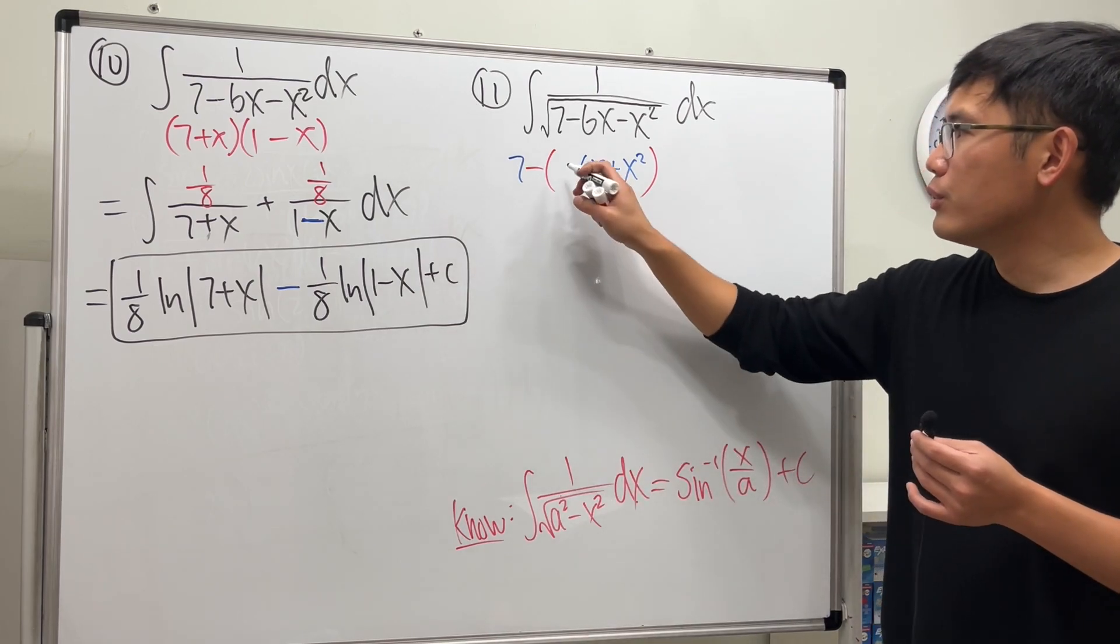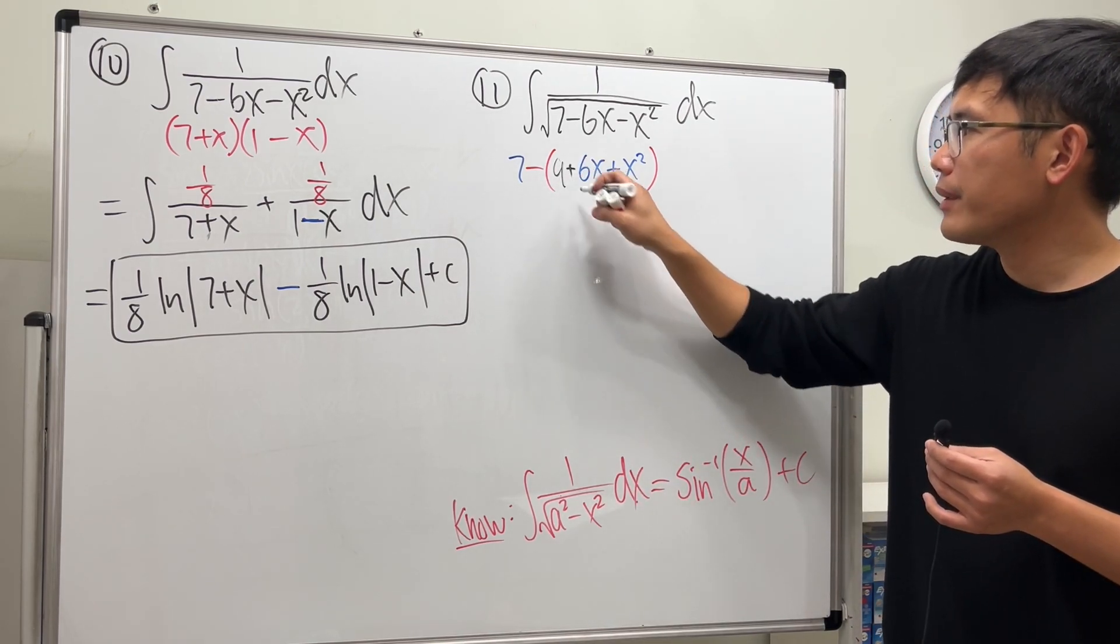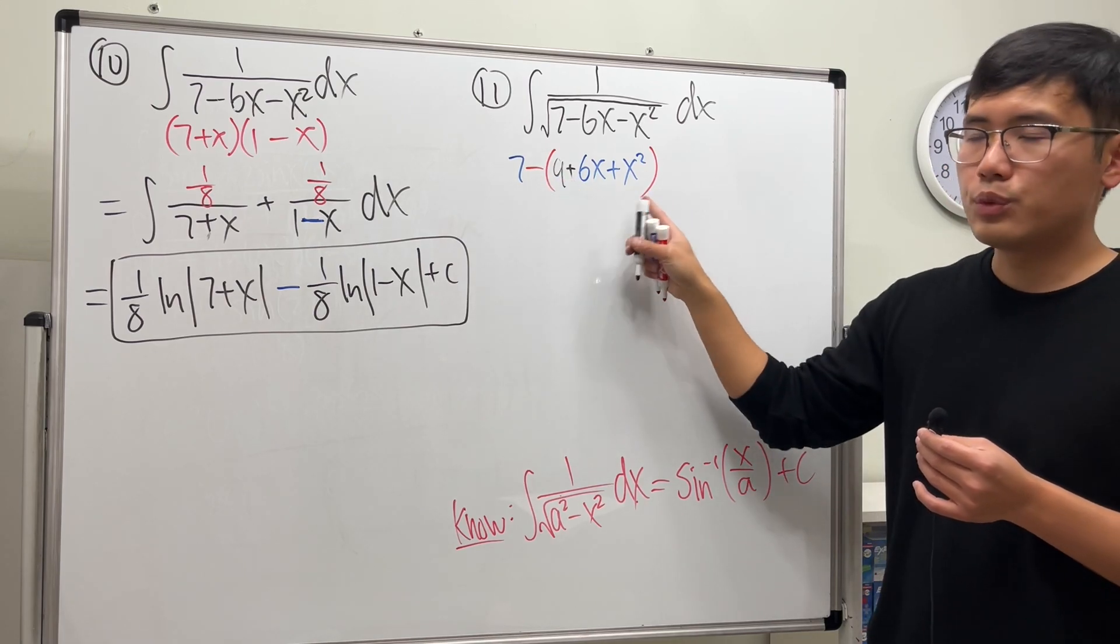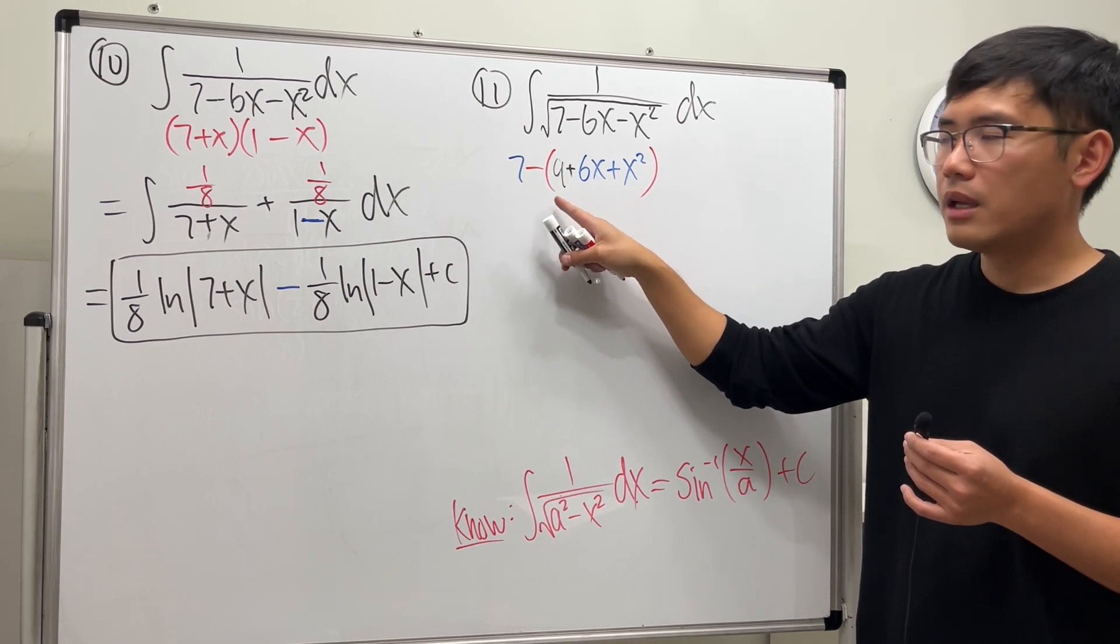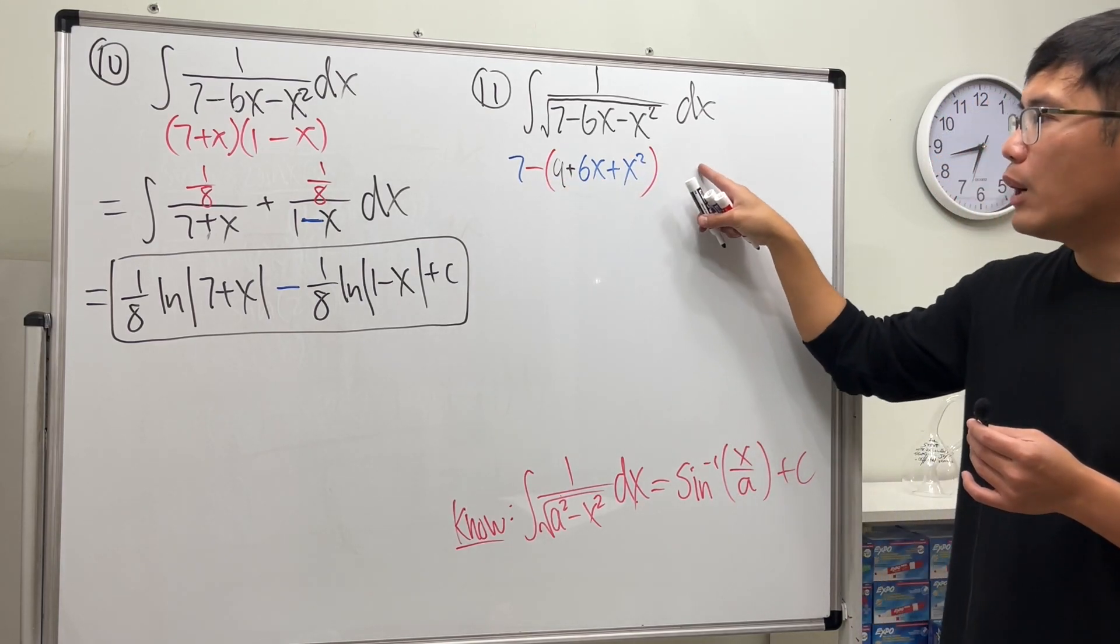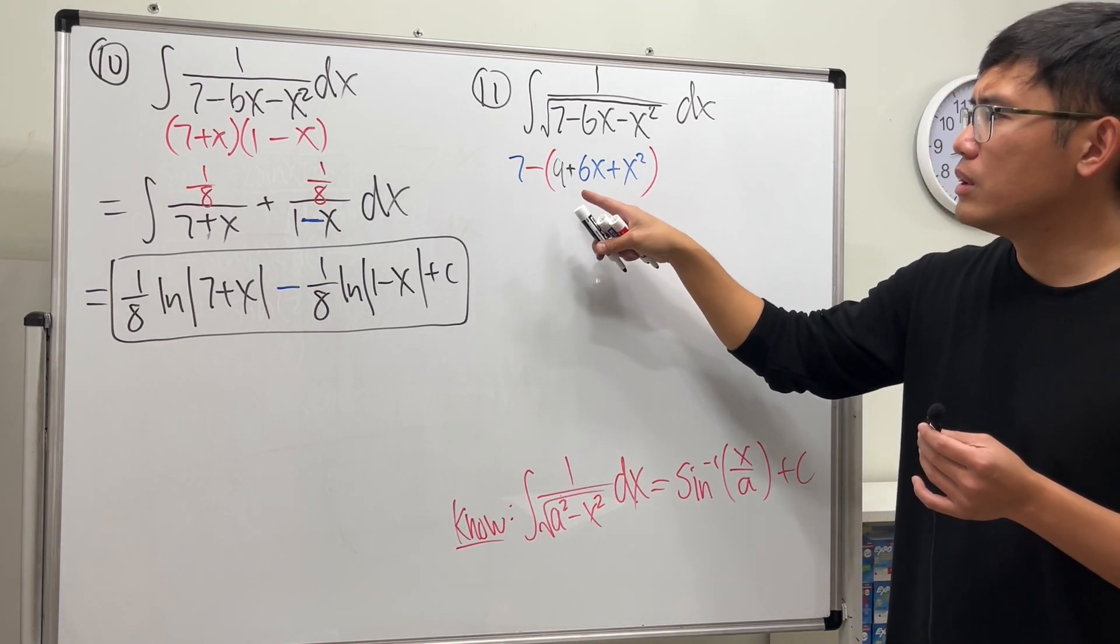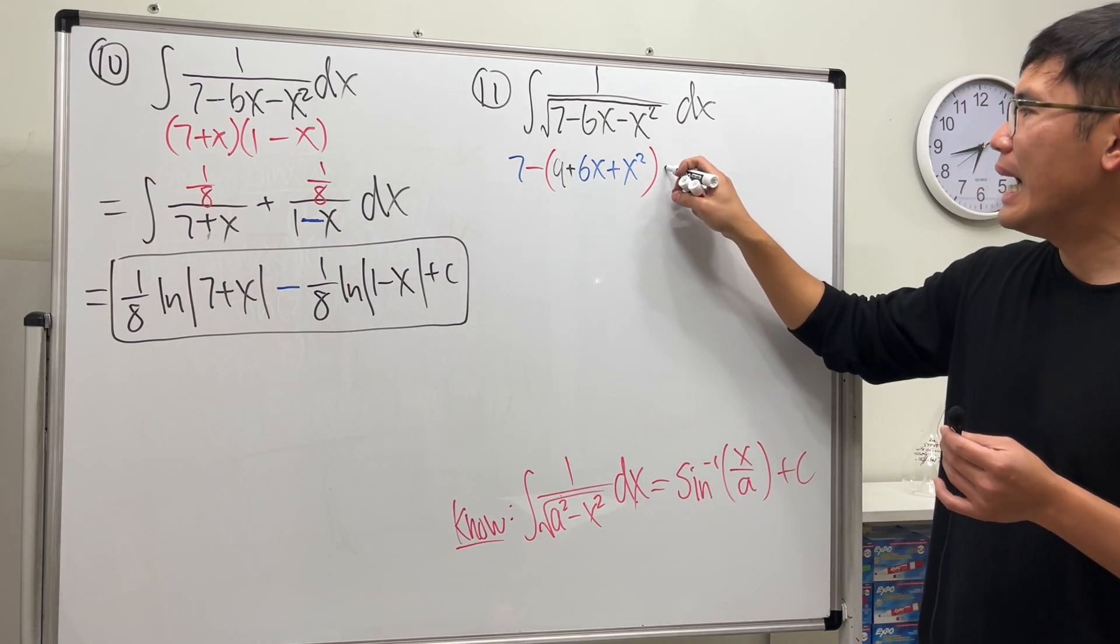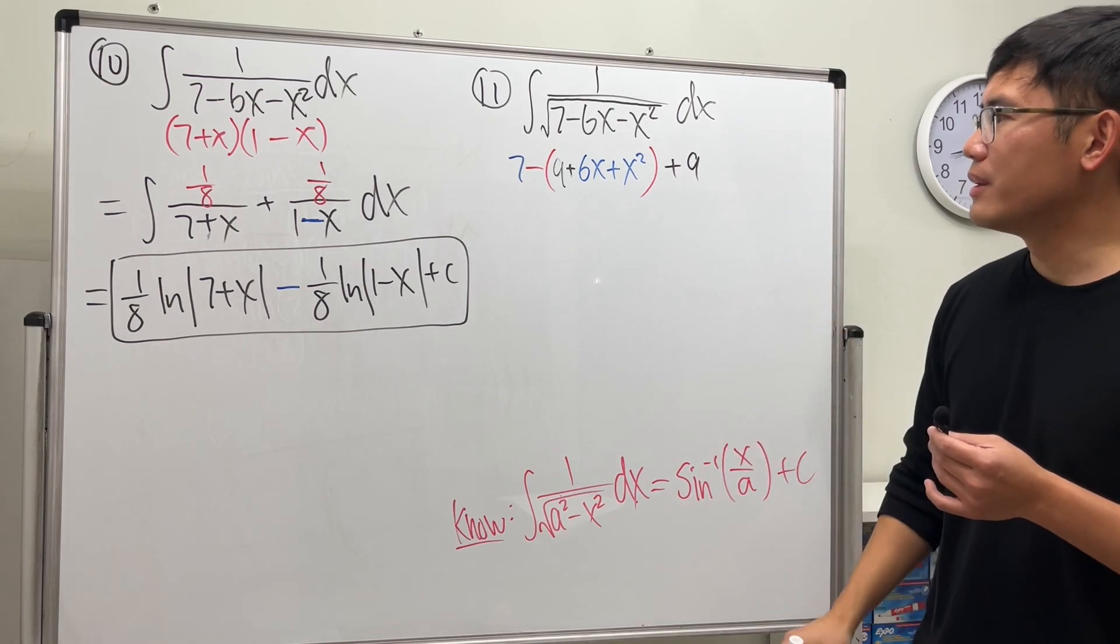So we will have to add the 9 right here. But notice this is inside of this parentheses, which is actually a negative 9. I will have to go out here and then I will have to add 9 to it. Because this is minus 9, I will actually have to add 9 to this right here.